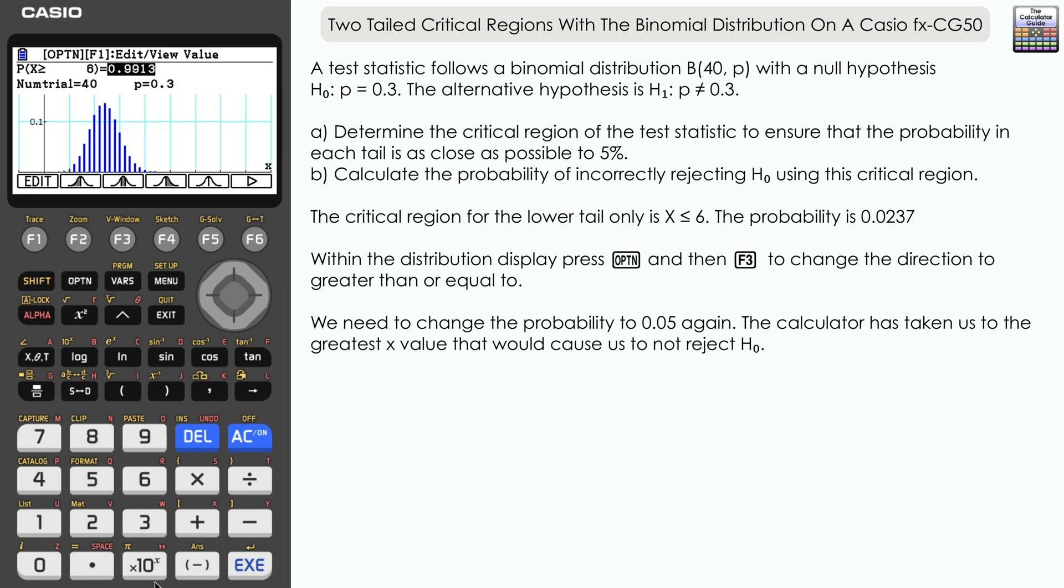You can see here, again the calculator has given us the last possible x value in the region where we would not reject H₀, which is 17.